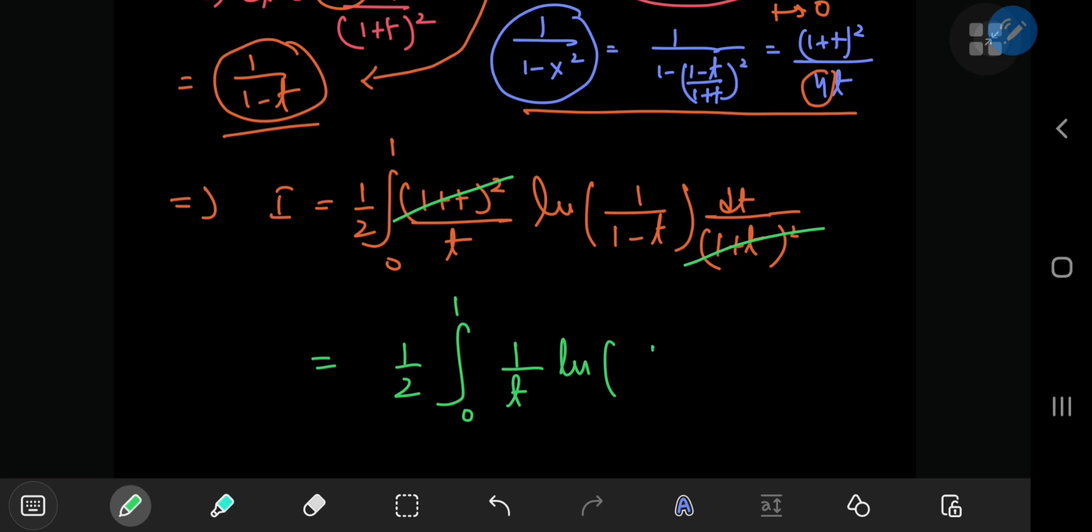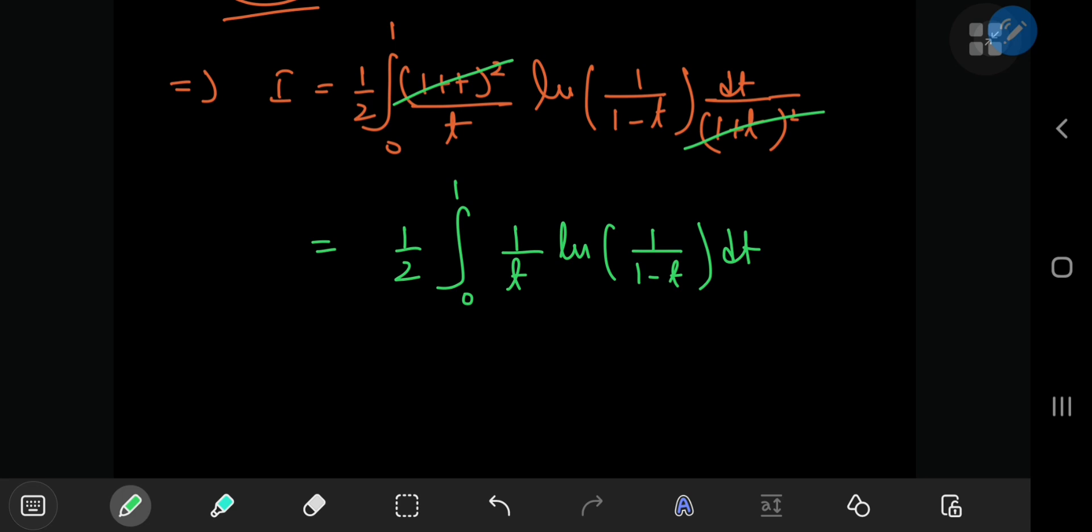and you have a 1 by 2 outside, and this is the integral from 0 to 1 of 1 by t times the natural log of 1 by 1 minus t, which is quite similar to the definition of the dilogarithm function, which indeed, if you use the properties of the natural logarithm and reciprocate its argument,